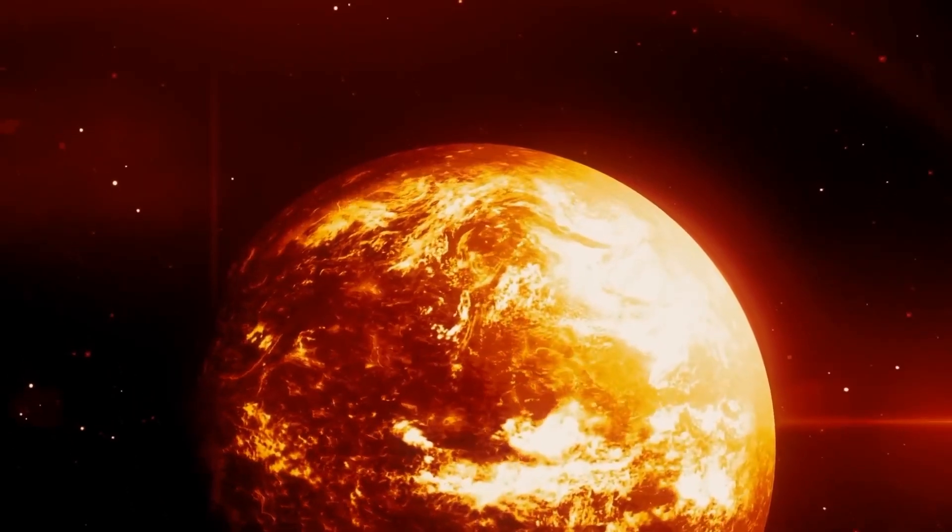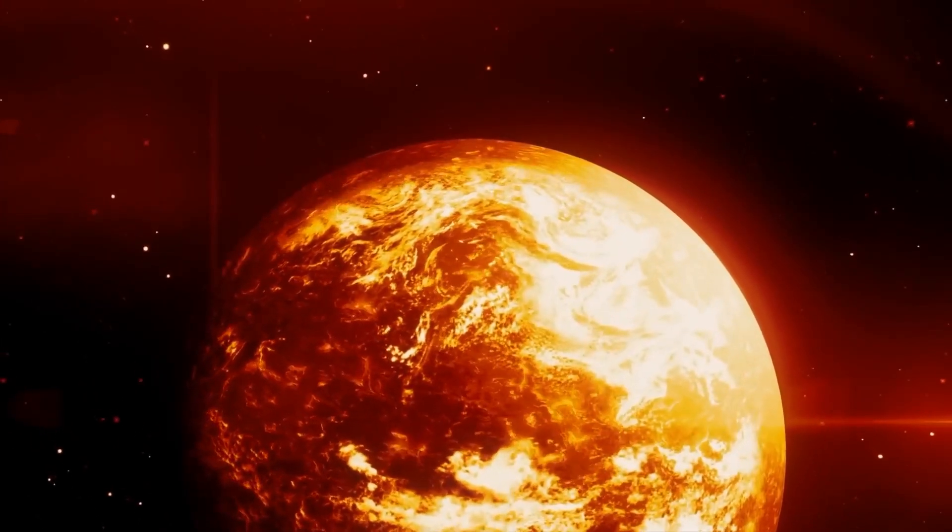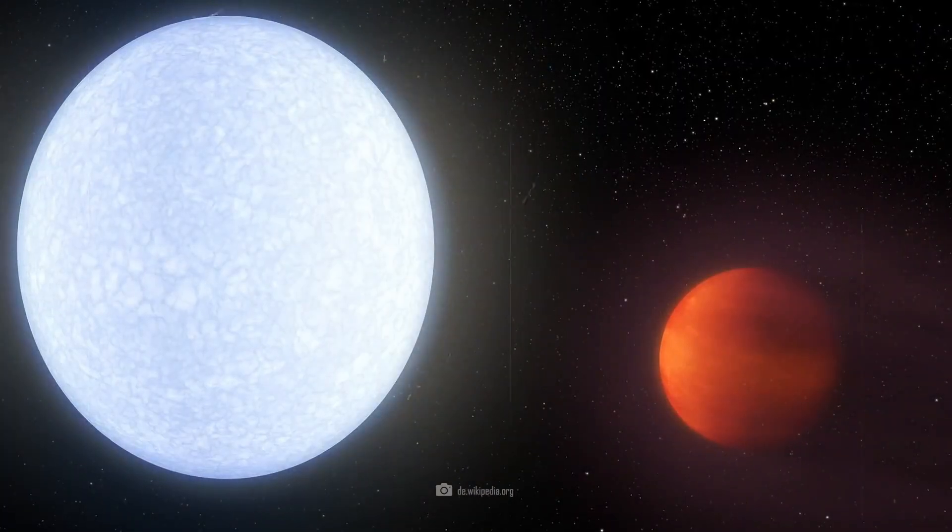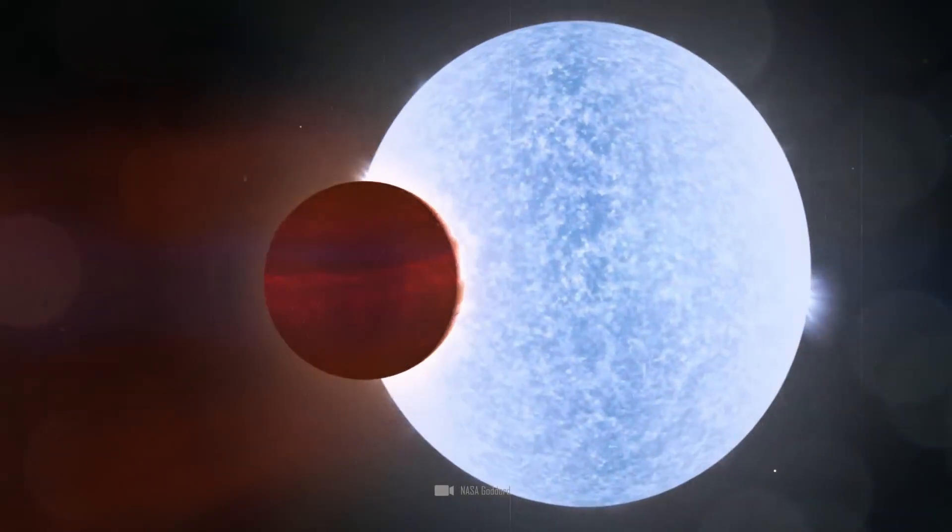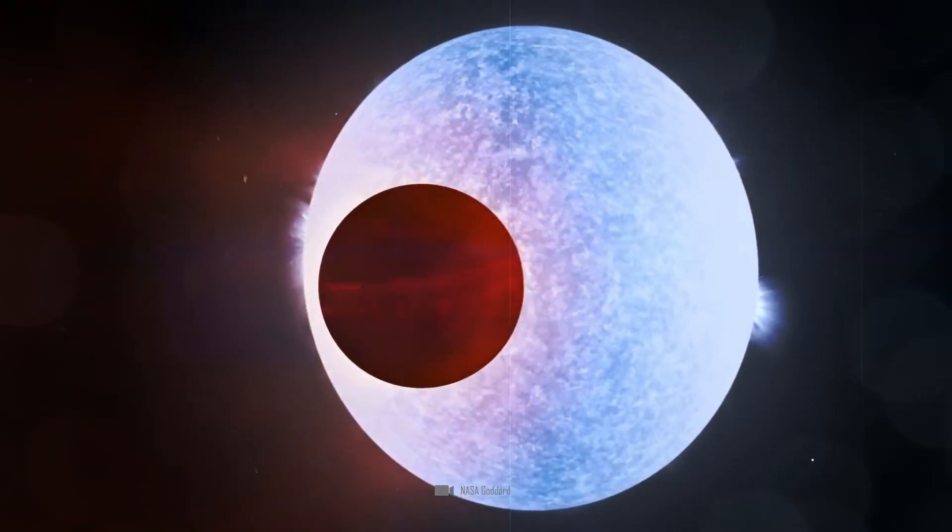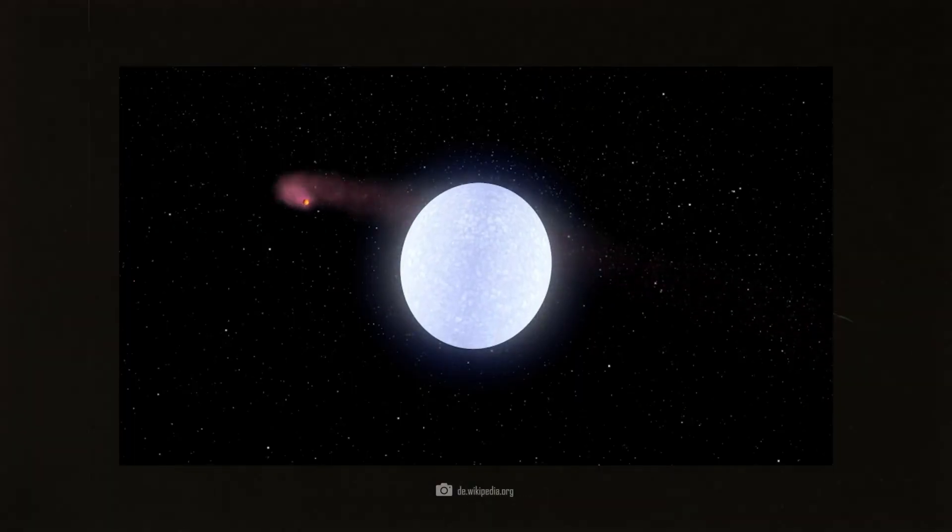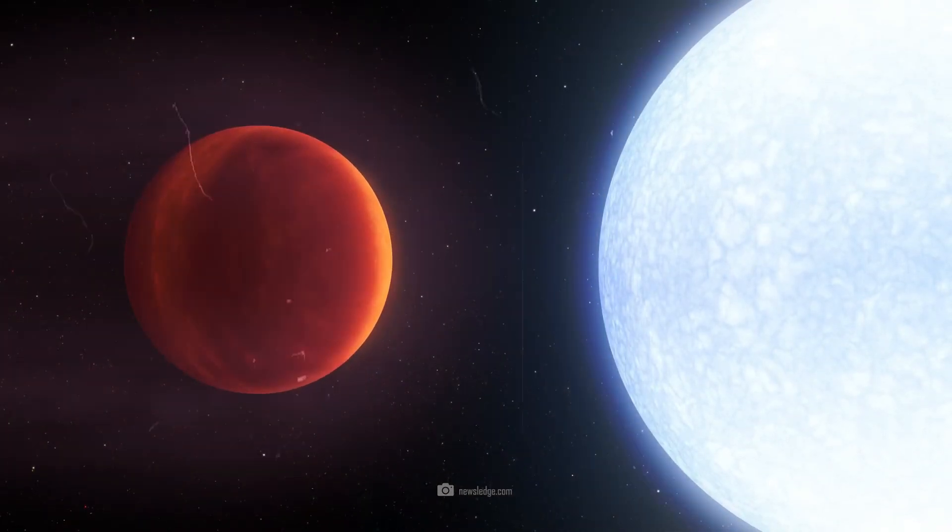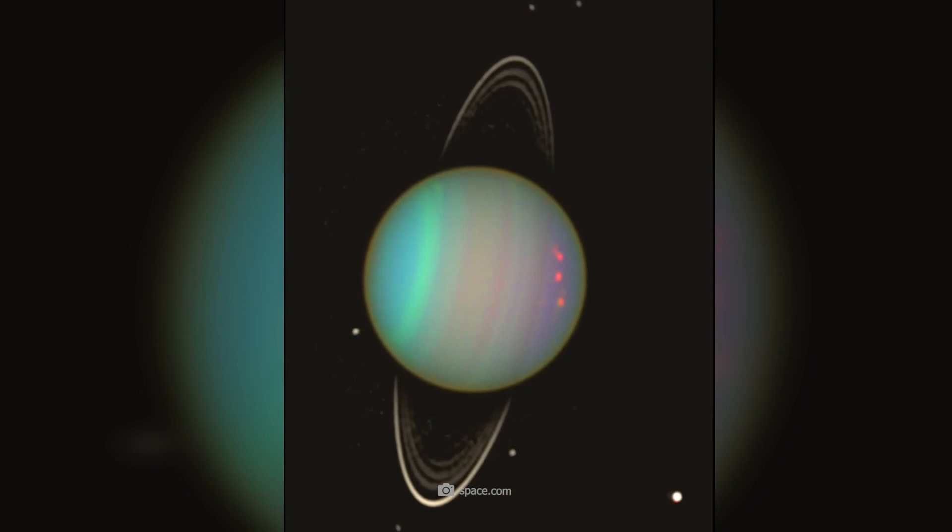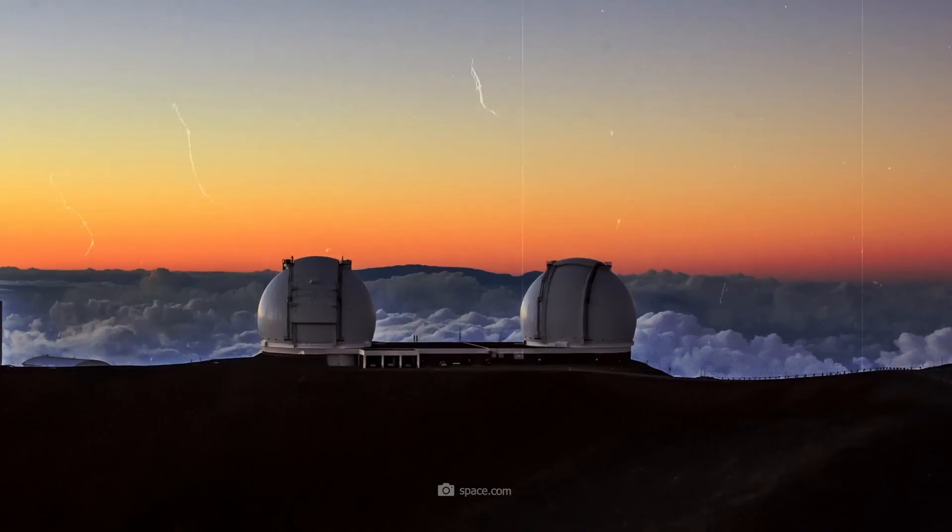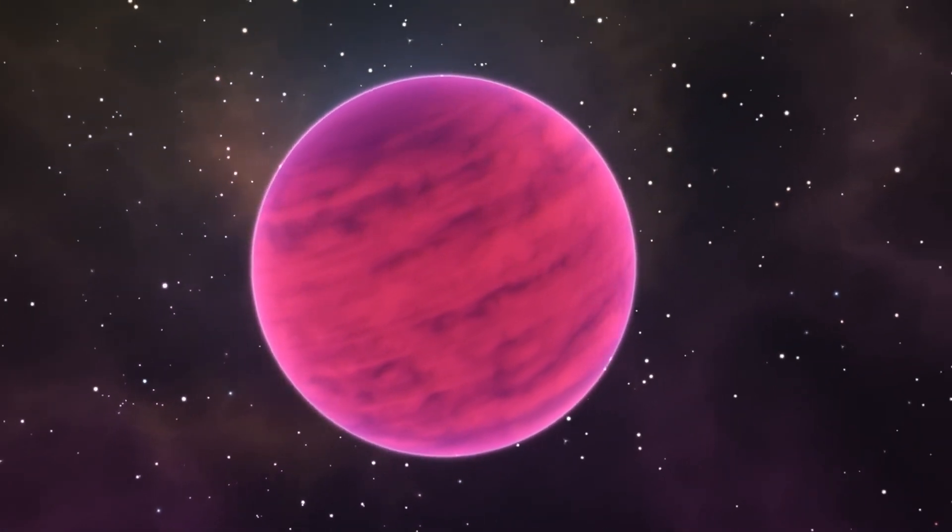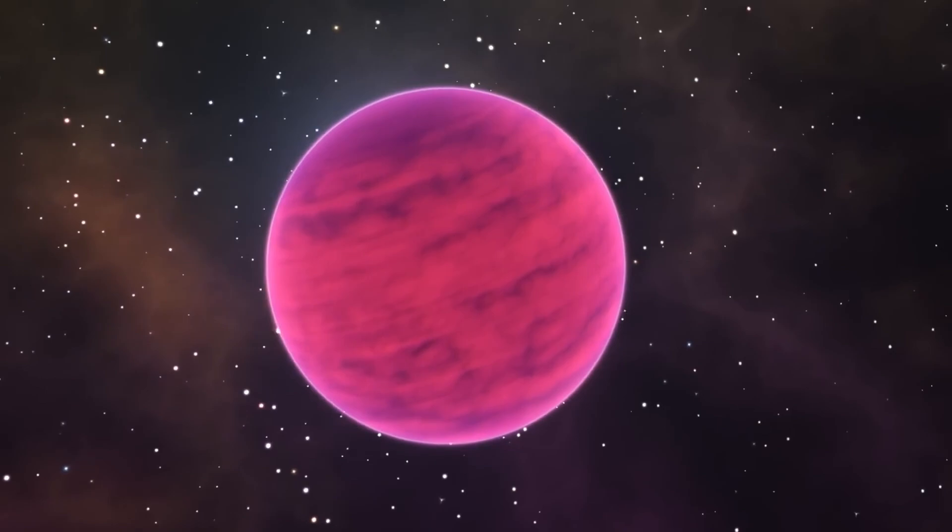If there really were life on Enceladus, the size of the potential habitat would be roughly comparable to the area of the German state of Lower Saxony. Dion and Tethys are also medium-sized moons of Saturn. Dion has a diameter of around 1,122 kilometers, while Tethys has a diameter of about 1,066 kilometers. Both moons are known for their icy surfaces and interesting geological features.